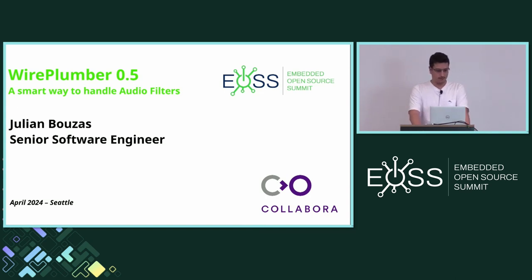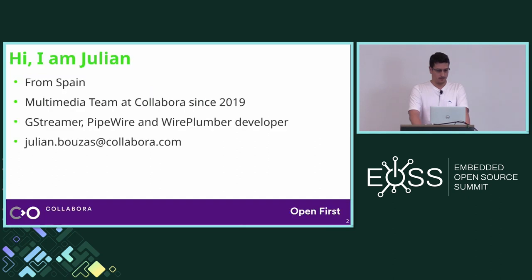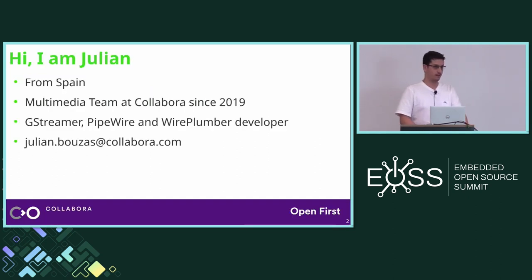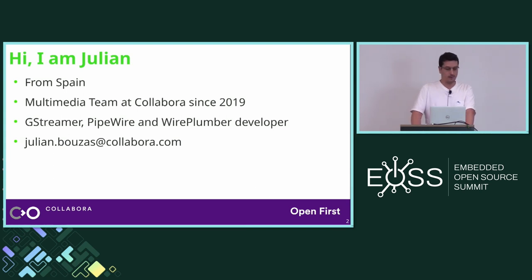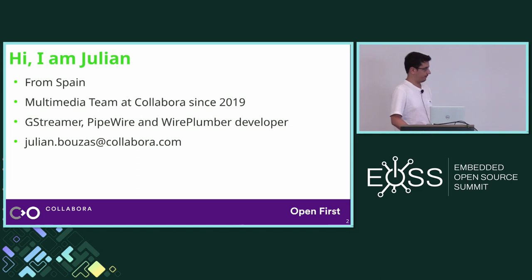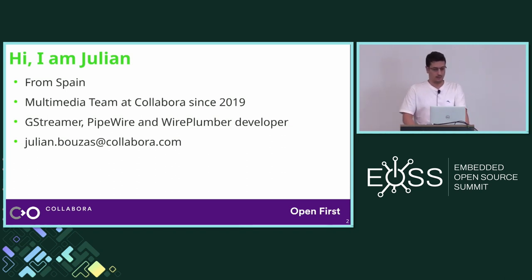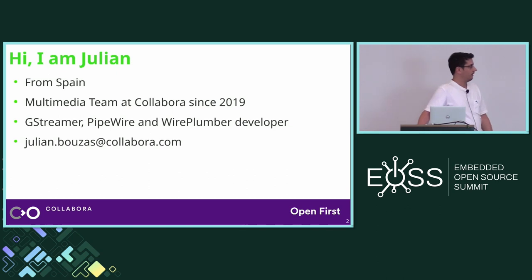Before jumping to the presentation I'm going to do a quick introduction to myself. My name is Julien. I'm from Spain and I've been part of the multimedia team at Collabora since 2019, working as a software developer on mostly open source multimedia projects such as GStreamer, PipeWire, and obviously WirePlumber.